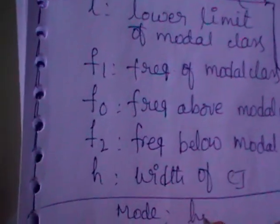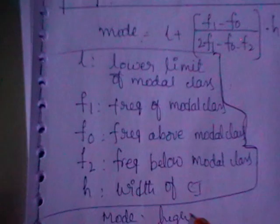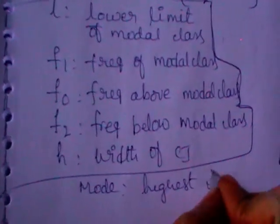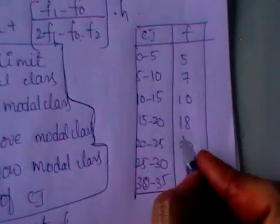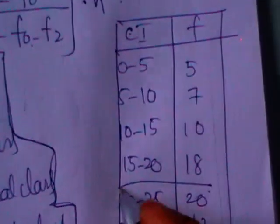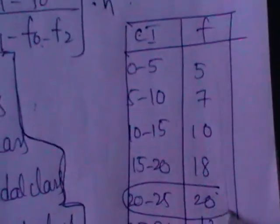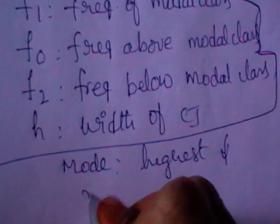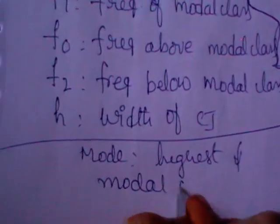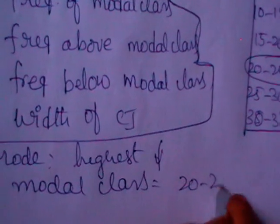First of all, like median, you should identify the modal class. Mode is nothing but the value with the highest frequency. Try to identify the one with maximum frequency, which is nothing but 20. Round off that particular row. The modal class here is nothing but 20 to 25.